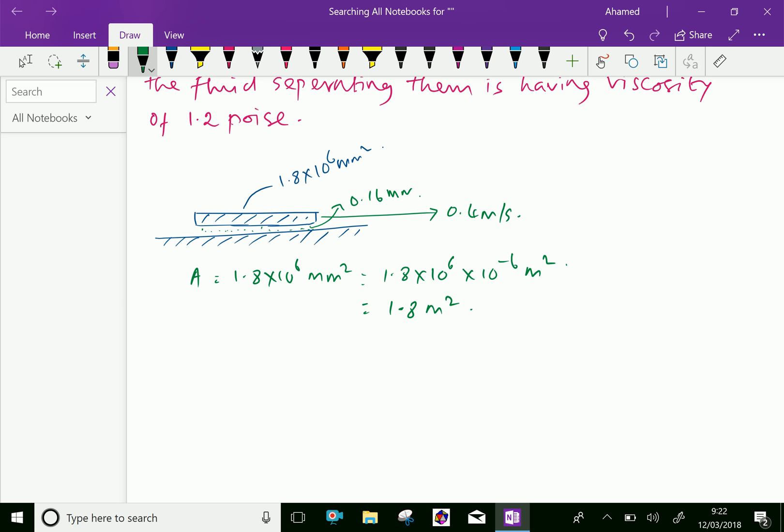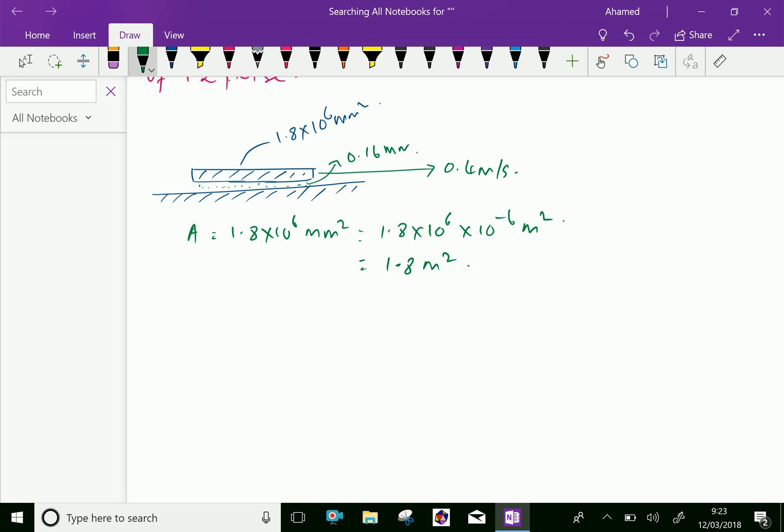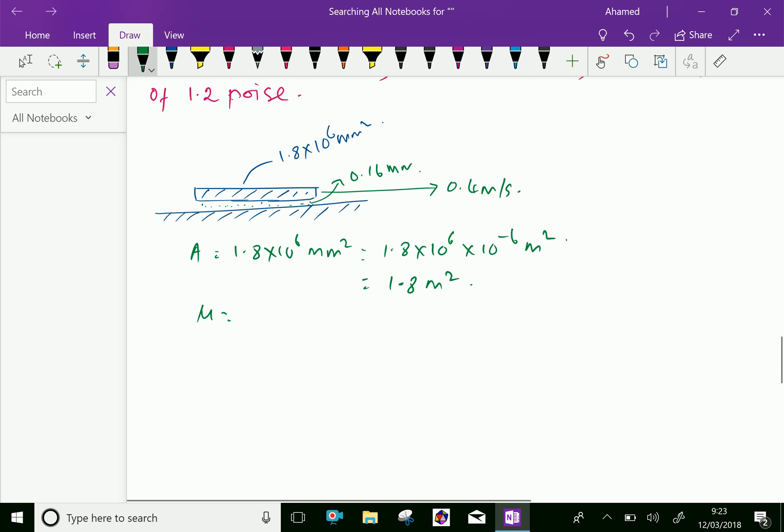Now, mu that is the dynamic viscosity, mu is given here 1.2 poise, which is equal 1.2 over 10 equals 0.12 Newton second per meter square.